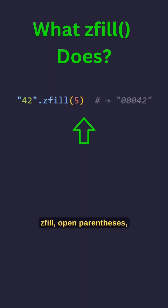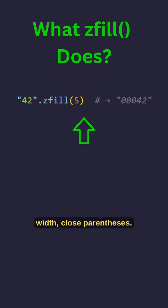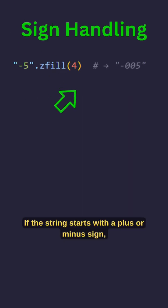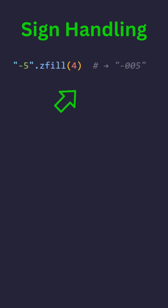zfill(width) pads zeros on the left until the string's length equals width. If the string starts with a plus or minus sign, zeros go after the sign, not before.